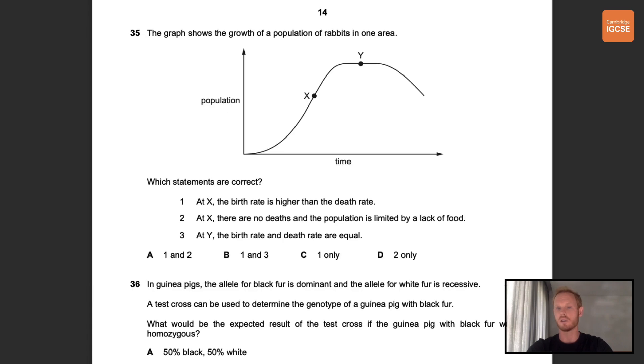Number 35. The graph shows the growth of a population of rabbits in one area. Which statements are correct? Number 1, at X the birth rate is higher than the death rate. Yes, the population at X is growing which means the birth rate must be higher than death rate. Number 2, at X there are no deaths and the population is limited by a lack of food. Wrong. There's no evidence that there are no deaths and the population is growing rapidly. It's clearly not limited. Finally number 3, at Y the birth rate and death rate are equal. Yes, we know this because there is no change in population. The correct answer for this one is therefore B.